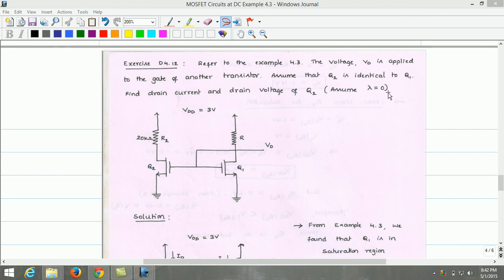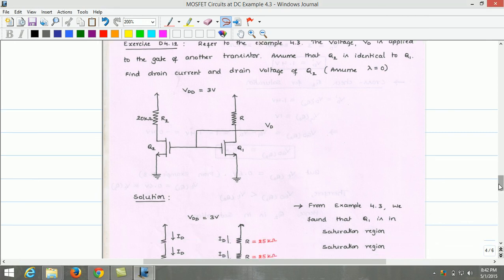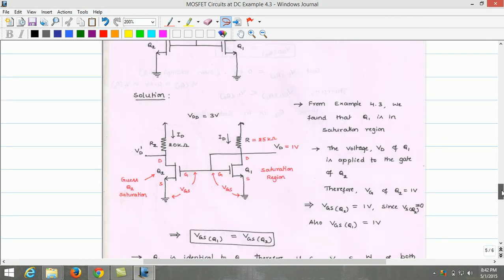The channel width modulation effect is zero. The circuit given is as follows. From example 4.3, we found that Q1 is in saturation region of operation.